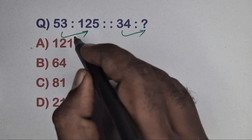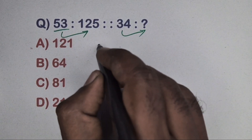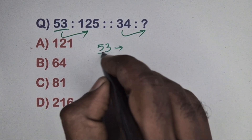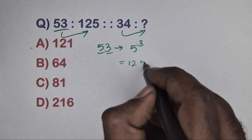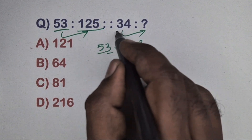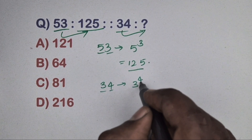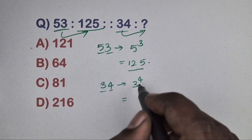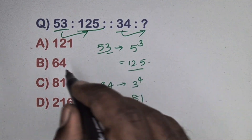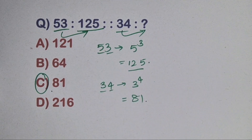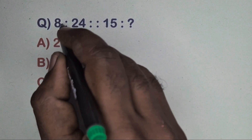Find the relation and find the answer. Take 53 — here 5 is the base and 3 is the power, so 5 cube equals 125. Same way, take 34 — 3 is the base and 4 is the power, so 3 to the power 4 equals 81. So 81 is the correct answer.